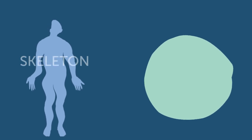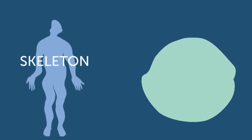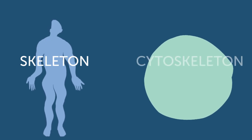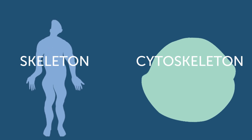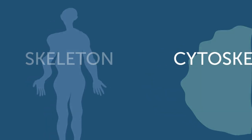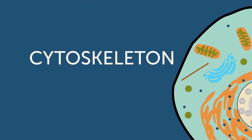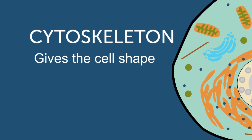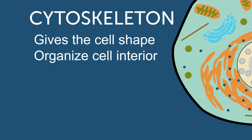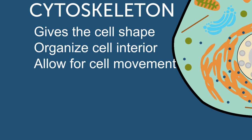In the human body, our skeleton of bones provides us with structure and support. In the cell, a structure called the cytoskeleton serves the same purpose. The cytoskeleton is made up of fibers and threads made of proteins that give the cell its shape, organize the inside of cells, and allow some cells to move from place to place.